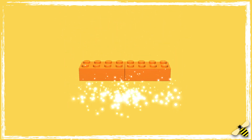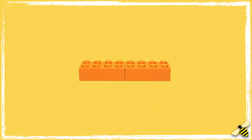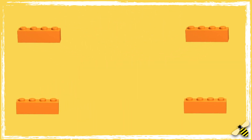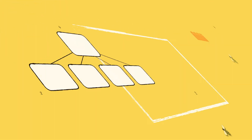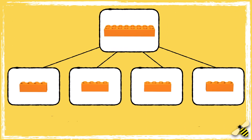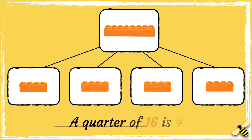Let's have a look at another brick. This brick has 16 studs. Let's try splitting this brick into quarters. We now have four pieces. There are four studs in each quarter, so a quarter of 16 is four.